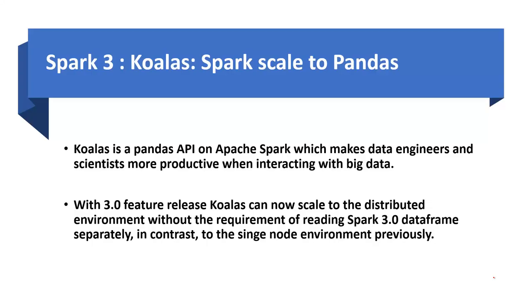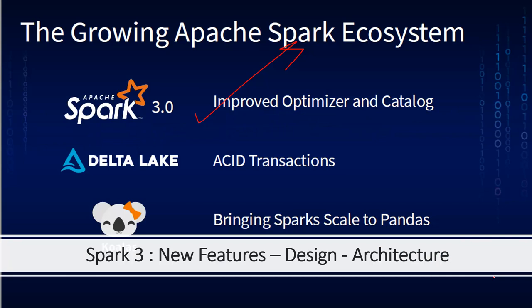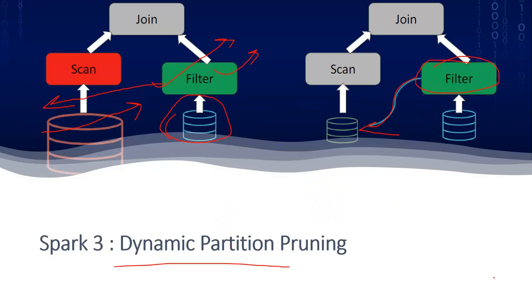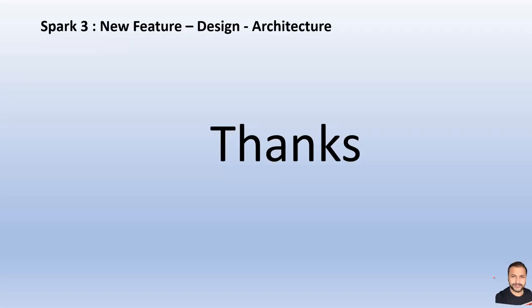To summarize the primary highlights of Spark 3: the top areas are improved optimizers and catalogs, and ACID transactions. Adaptive Query Execution and Dynamic Partition Pruning are some of the marquee features that will make Spark a strong processing engine for data warehouse and massively parallel processing scenarios. Thanks for watching — don't forget to subscribe to the channel, like, comment, and share. Have a great day!